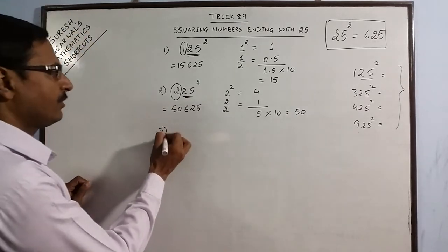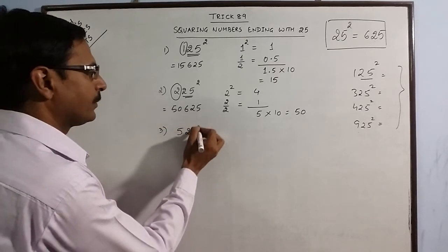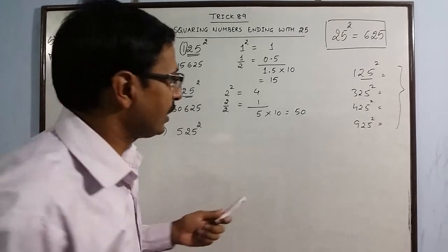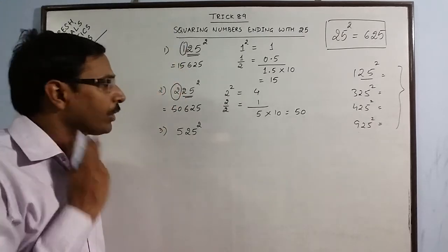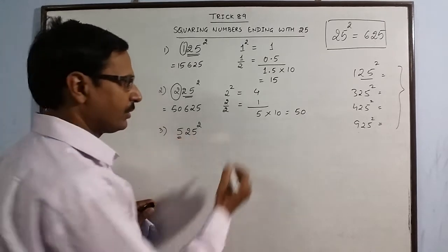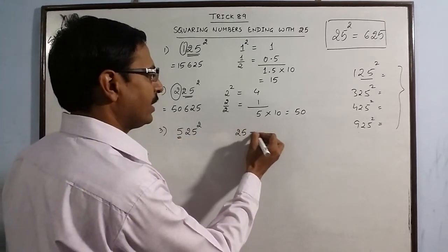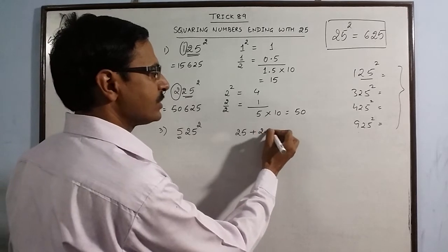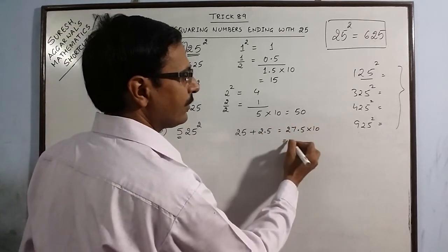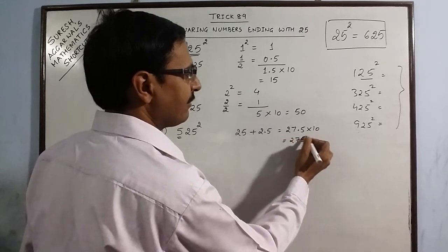Say we have 525 square. Now I am reducing the number of steps so that we can reduce the amount of time we are taking for calculating this. So you have 5 left out. 5 square is 25. Half of 5 is 2.5. So this is 27.5. Multiplied by 10, you have 275.